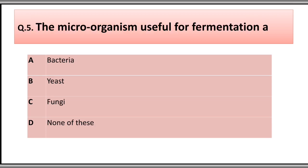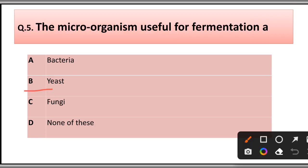Question number five: The microorganism most useful for fermentation is: A) bacteria, B) yeast, C) fungi, D) none of these. The correct answer is option B, yeast, which is useful for fermentation.